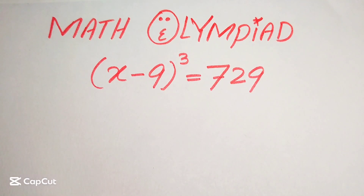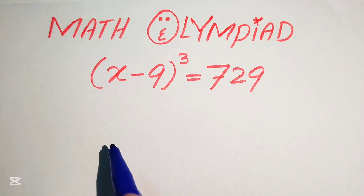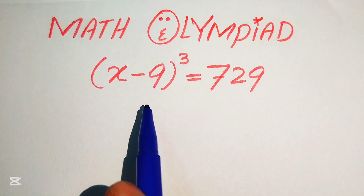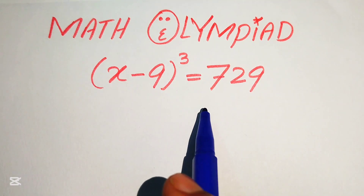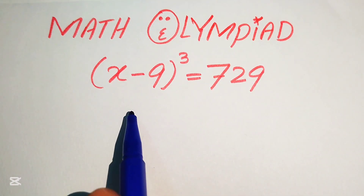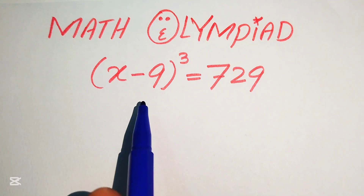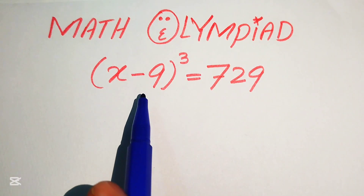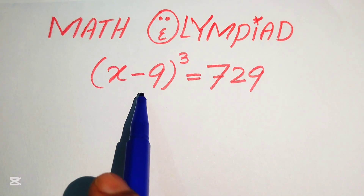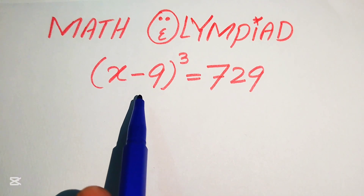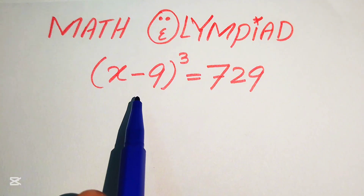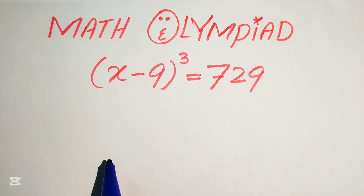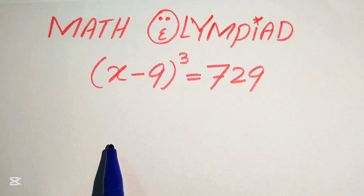Hello everyone, welcome to this algebra problem. Here we have (x - 9)³ equals 729 and we will solve for the values of x. This is a cubic equation, meaning it has the highest power of 3, which means this equation has 3 roots. We will find all 3 roots of this equation.